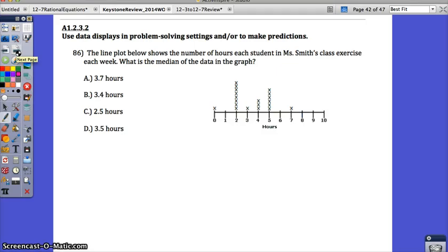Number 86. The line plot below shows the number of hours each student in Ms. Smith's class exercise each week. What is the median of the data in the graph? So this graph is just showing all the number of hours. I would write them out because if we want to find the median, we want to find the middle, which means that they need to be in order.